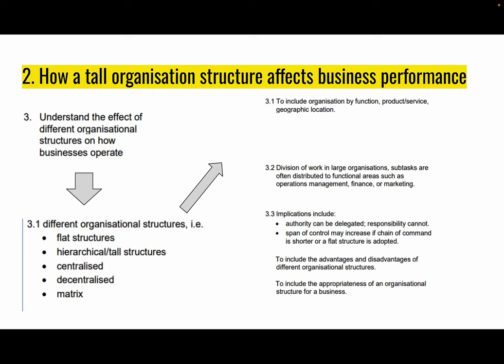Under 3.3, the implications: when we have a tall structure and organise by function, it's easier to delegate tasks to subordinates — authority can be delegated though responsibility cannot. A manager is still a manager but could ask others to take on particular tasks. Questions may relate to span of control — with a tall structure we have a long chain of command but a shorter span of control. We may also see questions about the advantages and disadvantages of that structure and the appropriateness of the structure for that particular business.